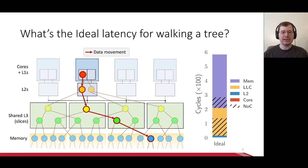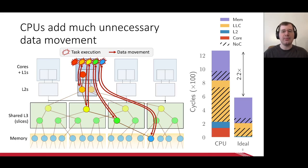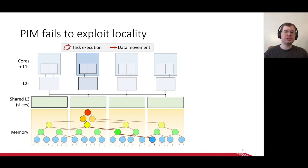So now that we've seen the ideal latency, let's see how some current systems compare. A traditional CPU can only execute in the core, so data needs to be brought back to the core so it can be processed. This is okay for the L1 and L2, but for lower locality data in the LLC and memory, this leads to significant overhead. As you can see, CPU takes over twice as long as ideal, and most of the added latency is in the network.